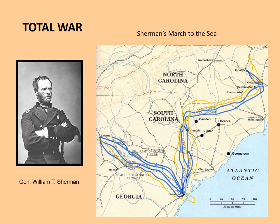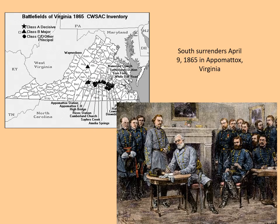Southerners could not withstand the hardships brought on by total war and the massive numbers of Union troops. The war came to an end in April of 1865 when Southern General Robert E. Lee surrendered to Union General Ulysses S. Grant at Appomattox, Virginia, bringing this fight to an end.